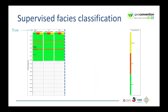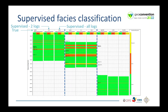Here we have the supervised classification with all logs as inputs — both results are like the true logs. The results for well 3 and ST1, as expected by the confusion matrix, show all results are like the true logs. The accuracy for all wells is basically the same, about 98%.